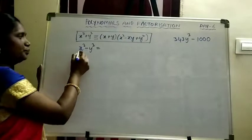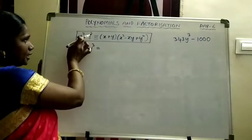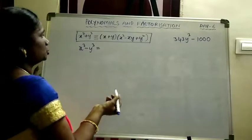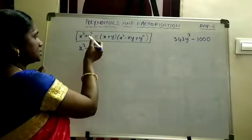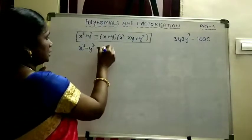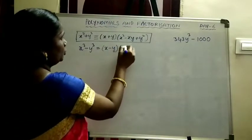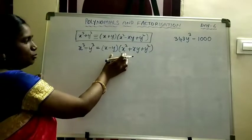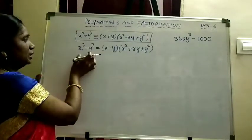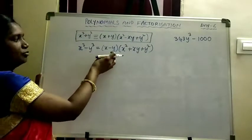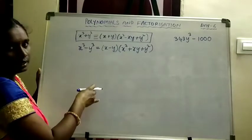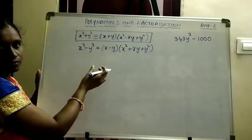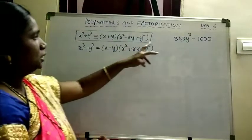One more identity: x cube minus y cube. It is just like x cube plus y cube, but here we have minus y cube instead of plus y cube. In the given equation in place of the plus we have minus. So the answer is x minus y into x square plus xy plus y square. You can verify this - if you multiply these two terms you will definitely get x cube minus y cube. Also check for this identity by taking some value for x and some other value for y.